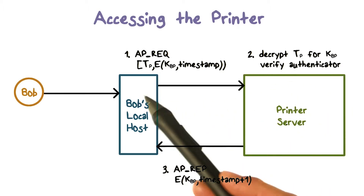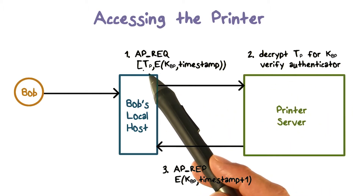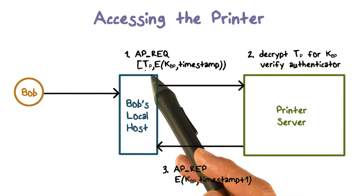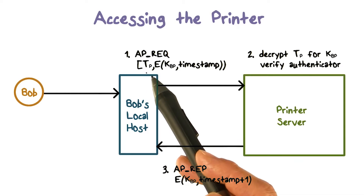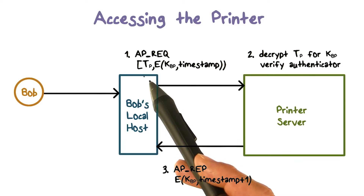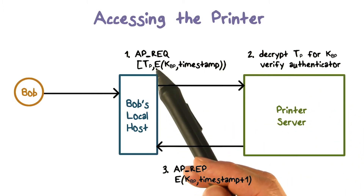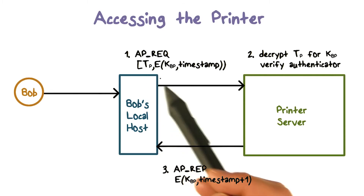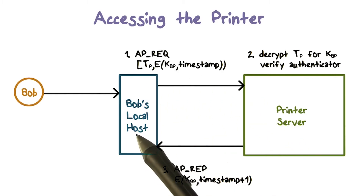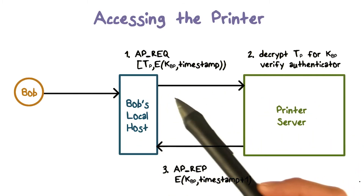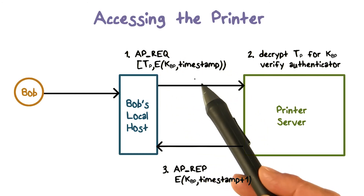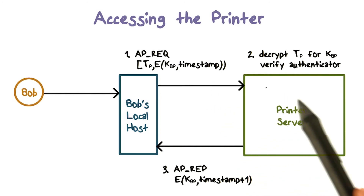When the printer gets the ticket, it can decrypt the ticket using its master key shared with the KDC, because the ticket was created by the KDC and encrypted using the shared key between the printer and the KDC. The printer can verify that KBP was created by the KDC to communicate with Bob's local host. The print server then uses KBP to verify the authenticator by decrypting the ciphertext and verifying that the result matches the current timestamp.